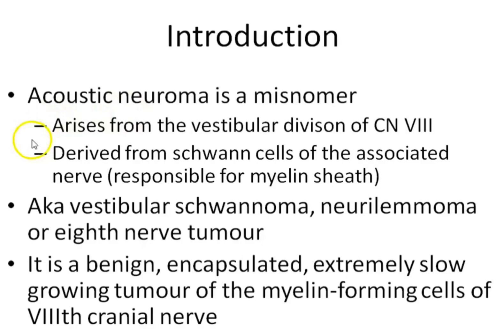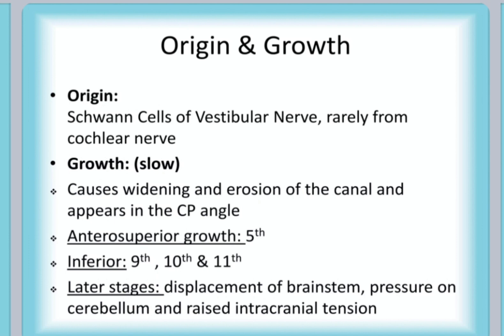Acoustic Neuroma is neither acoustic nor a neuroma. It actually arises from the vestibular division of the vestibulocochlear nerve, and it is not a neuroma but arises from the myelin-forming sheath known as Schwann cells, which is responsible for the formation of myelin. It is a benign, encapsulated, extremely slow-growing tumour.